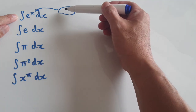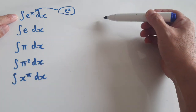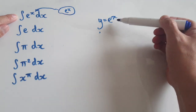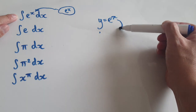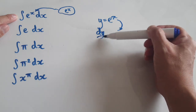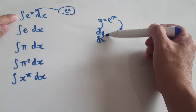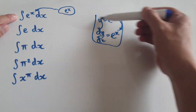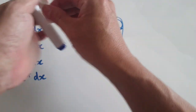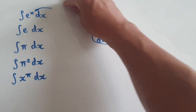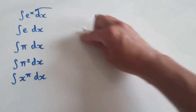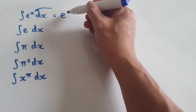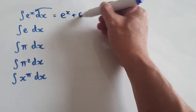Well, the answer turns out to be e to the power of x, because if y equals e to the power of x, when you differentiate it, dy by dx equals e to the power of x. I'm expecting you to know this. So when you integrate e to the power of x, it will be e to the power of x plus c.